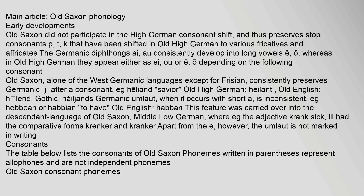Germanic umlaut, when it occurs with short a, is inconsistent — e.g. 'hebbjan' or 'habian' (to have), Old English 'habban.' This feature was carried over into the descendant language of Old Saxon, Middle Low German, where for example the adjective 'krank' (sick/ill) had the comparative forms 'kranker' and 'krankər.' The consonant phonemes of Old Saxon include labial, dental/alveolar, palatal, velar, and glottal positions, with nasals m and n; voiceless plosives p, t, k; voiced plosives b, d, g; fricatives including sibilants s and z, and non-sibilants f, v, theta, and h; approximants l, j, w; and rhotic r.